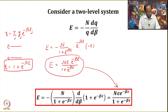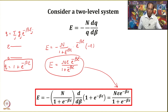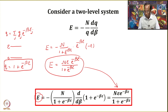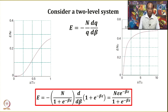Since we are talking about a two-level system, we can plot the energy as a function of temperature and see how the energy varies as temperature changes. It becomes easier if you plot E/(nε) versus kT/ε, so the remaining terms are expressed in terms of temperature.